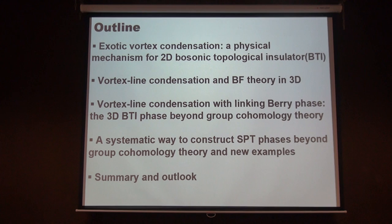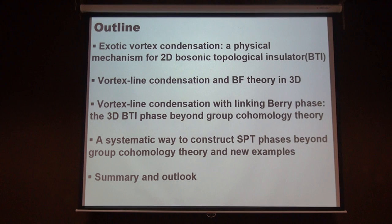In Ashvin Vishwanath's paper there is a new state beyond cohomology that does not require U(1) symmetry. You can impose time reversal and U(1) symmetries — U(1) is a subgroup — but the state is stable even without U(1). Adding an additional U(1) it is still stable, so U(1) is not necessary. In my approach I will also show one case where U(1) is not necessary, but because I start from the picture of vortex condensation it is natural to keep at least one U(1).